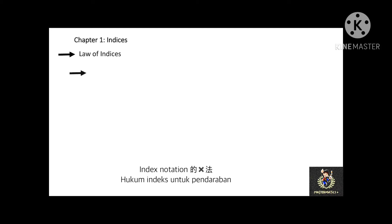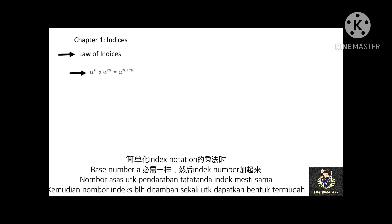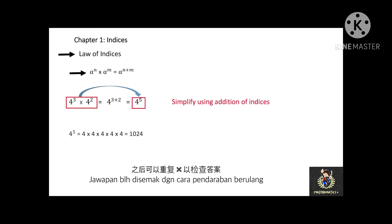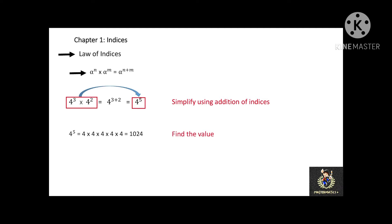Let's proceed to the law of indices. When you see the multiplication of numbers with index notation with the same base number, the multiplication can be simplified using addition of indices. For example, 4 to the power of 3 multiplied by 4 to the power of 2. According to the addition of indices, we add the index numbers: 3 plus 2. Therefore the answer is simplified to 4 to the power of 5, which equals 1024.